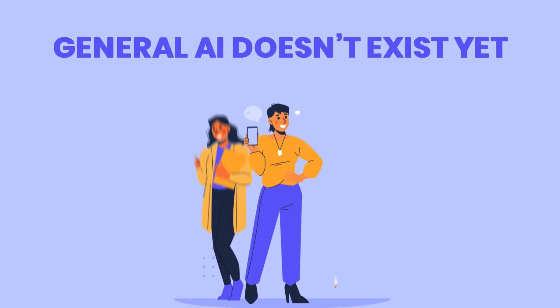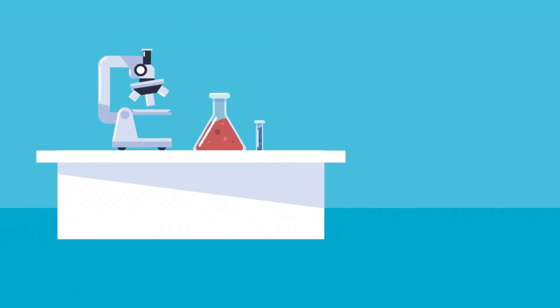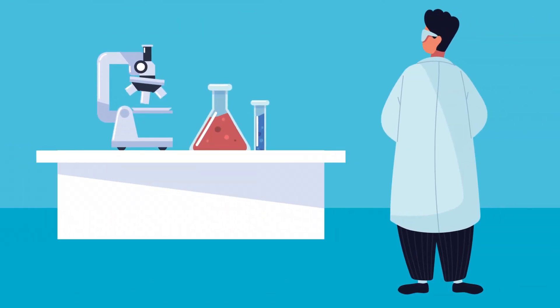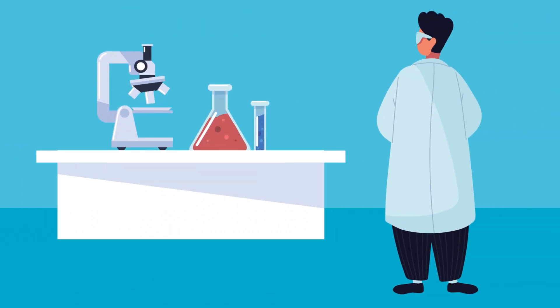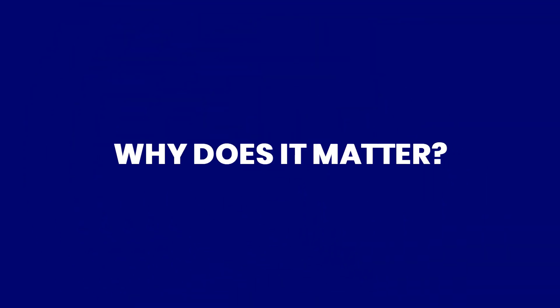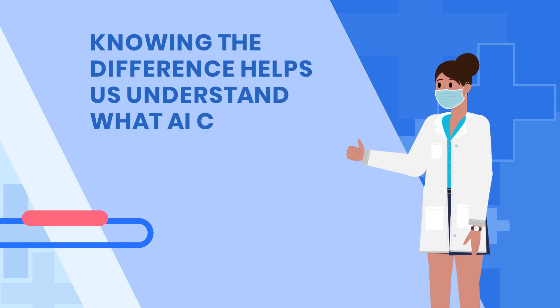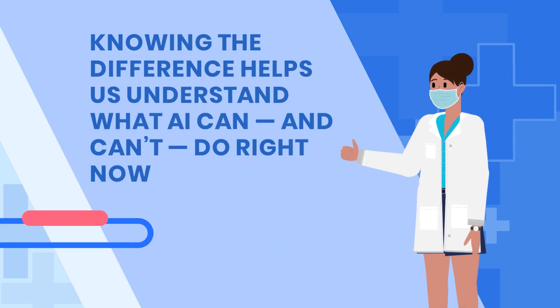Here's the catch — general AI doesn't exist yet. Scientists are still working on it, and it's one of the biggest goals in the AI world. So why does it matter? Knowing the difference helps us understand what AI can and can't do right now.